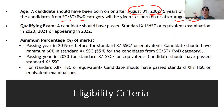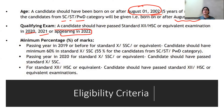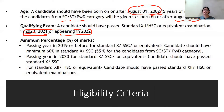The second eligibility parameter is the qualifying exam. The third is minimum percentage. If you belong to the General category, you should have 60%, and if you belong to the reserved category like SC, ST, or PWD, then you should have 55% score. So the three parameters are: age, qualifying exam, and minimum percentage.